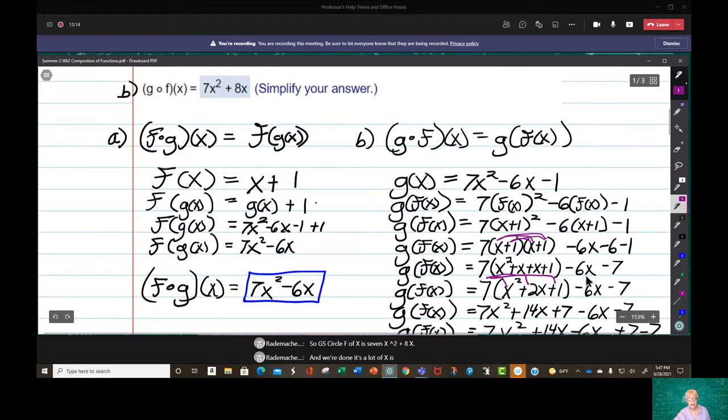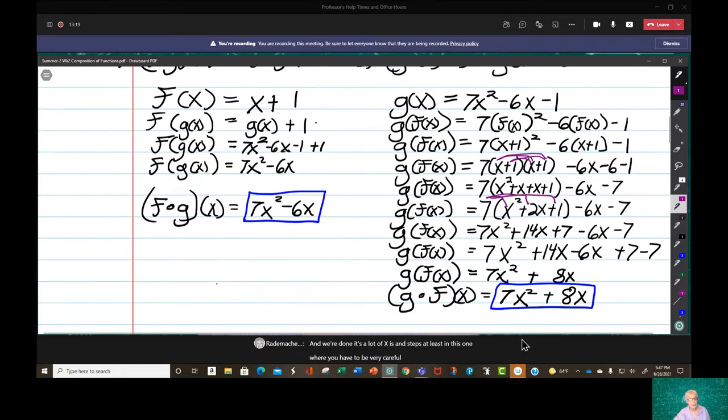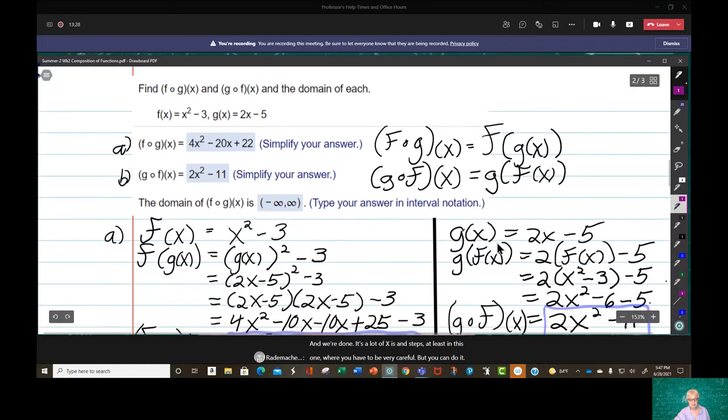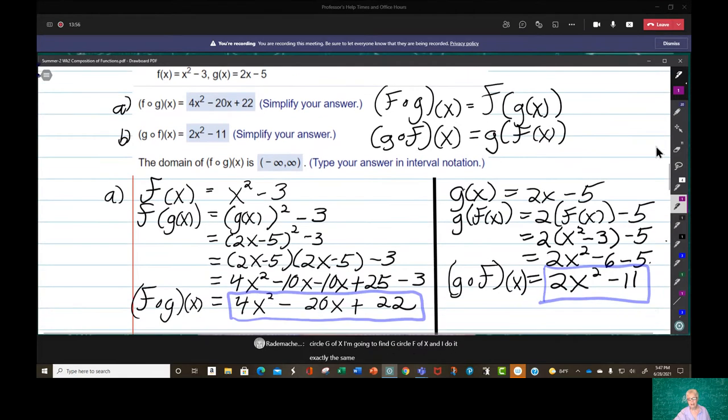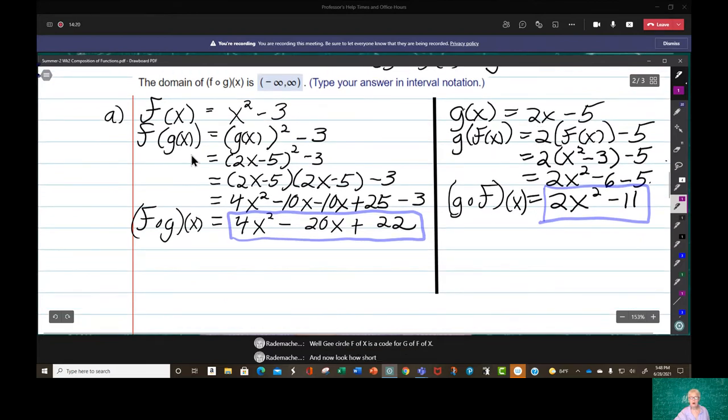It's a lot of x's and steps. At least in this one, where you have to be very careful. But you can do it. Alright, now we're going to do the same kind of problem again. f of x equals x squared minus 3. g of x equals 2x minus 5. I'm going to find f circle g of x. I'm going to find g circle f of x. And I do it exactly the same way. Remembering that f circle g of x is a code for f of g of x. And g circle f of x is a code for g of f of x. And now look how short both these problems are. I love it.